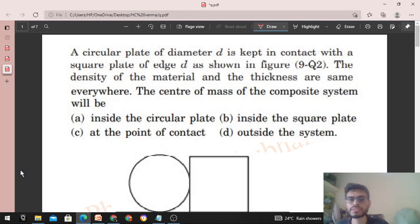Okay, hi everyone. Today let's discuss this interesting problem. It says a circular plate of diameter d is kept in contact with a square plate of edge d as shown in the figure. The density of the material and the thickness are same everywhere.